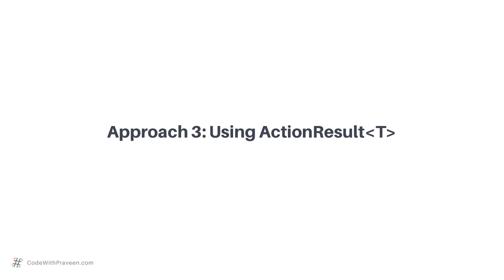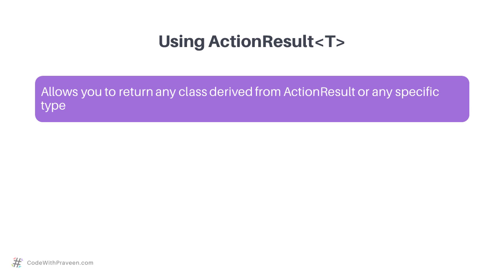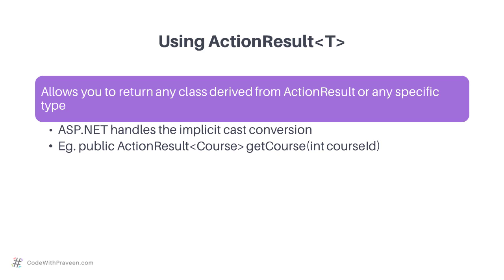The third and final approach involves using ActionResult of T. This allows you to return any class derived from ActionResult or any specific type. As you may have guessed, it is the combined form of approach 1 and approach 2. You can return any type as in approach 1, as well as types derived from ActionResult. ASP.NET handles the implicit cast conversion of the primitive or complex type to ActionResult of T, so you need not do anything extra.